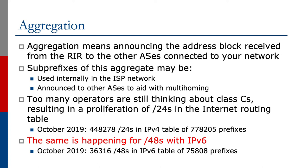When this recording was made in October 2019, we see 448,000 slash 24s in the IPv4 table. This table has 778,000 prefixes in it. Interestingly, the same is happening for IPv6 — we see 36,000 slash 48s in an IPv6 table of 75,000 prefixes.